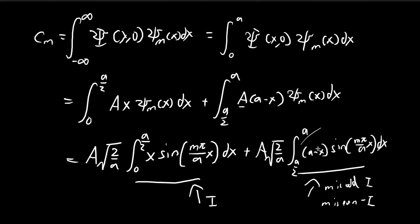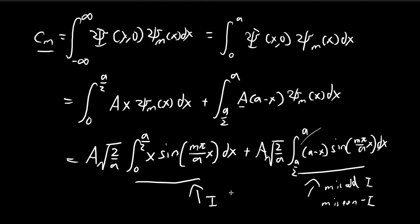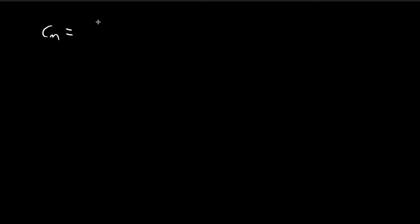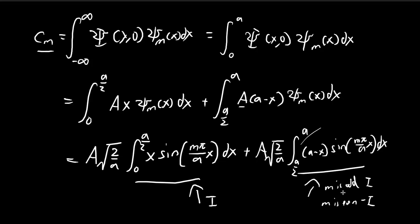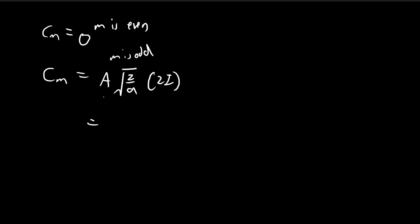Now that we've evaluated both integrals, we substitute into our expression for cm. Notice that if m is even, we have i from the first integral and negative i from the second, so the whole thing is zero — i minus i. When m is odd, we instead have the constant times the square root of 2 over a times 2i, one i from each integral. So this formula only applies when m is odd; otherwise, cm is equal to zero.